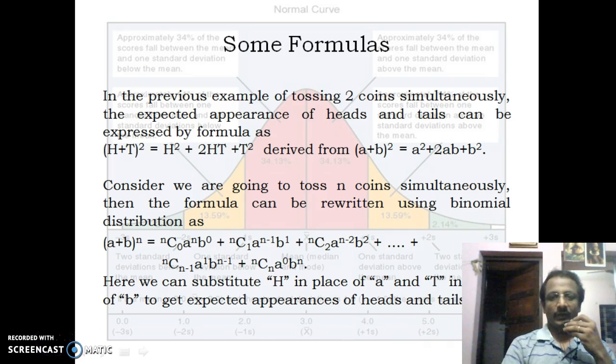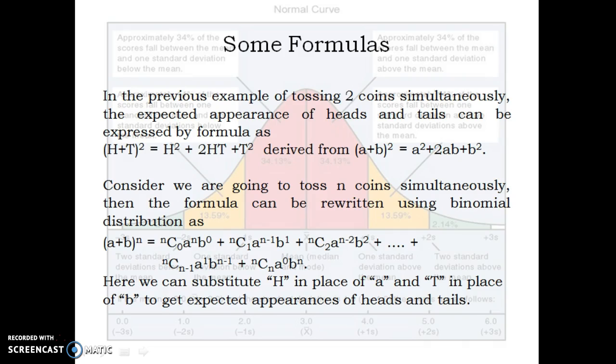We can see some formulas here. (H+T)² = H² + 2HT + T², the same formula as (a+b)² = a² + 2ab + b². From this equation, we can see that to get two heads is one chance, one head and one tail is two chances, and two tails is one chance. Here you can see one here, two here, and one here. In this way, we can expand this formula.